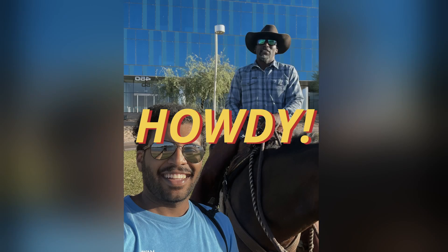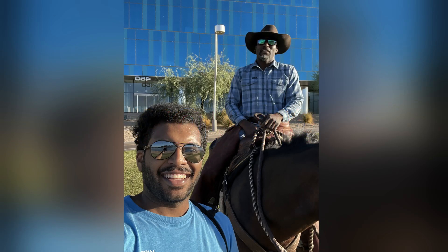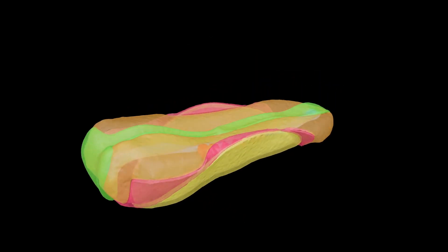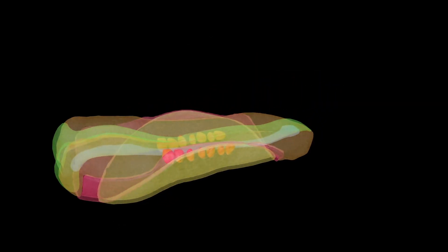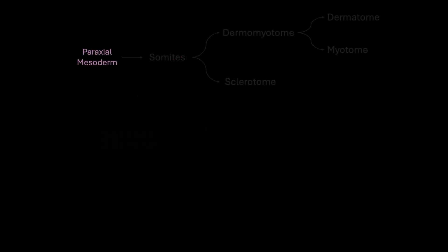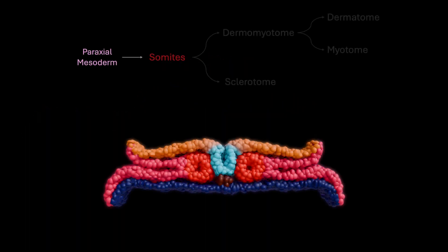Hey, I'm Kalib, a second-year medical student at the Mayo Clinic Alix School of Medicine. In our last episode, we watched somites appear along the embryo's axis — repeating blocks of condensed mesoderm that lay down the body plan.